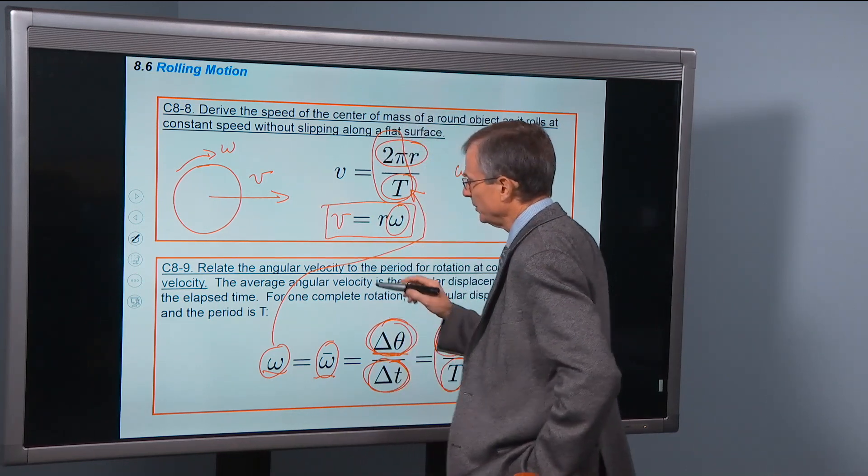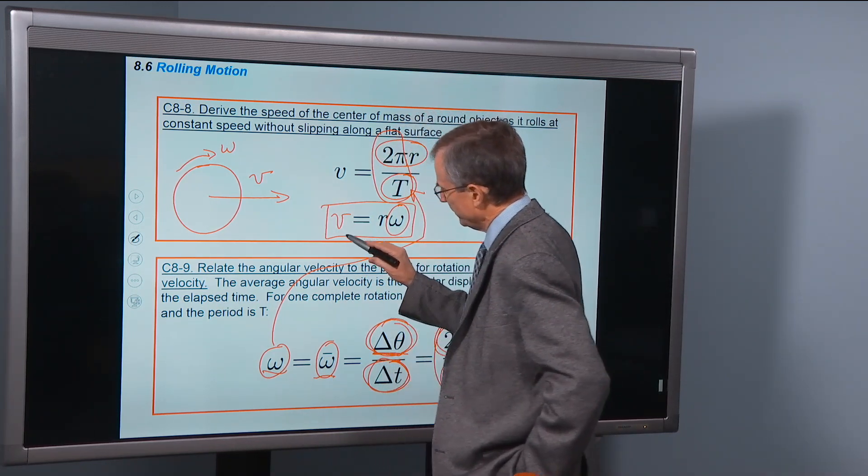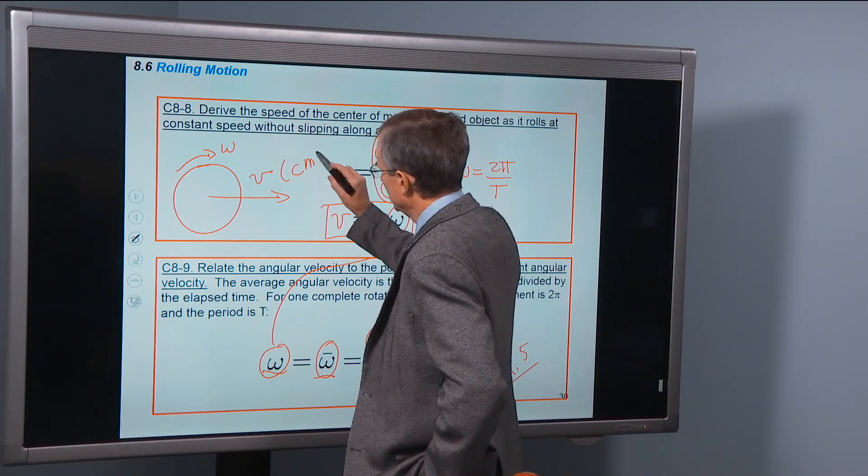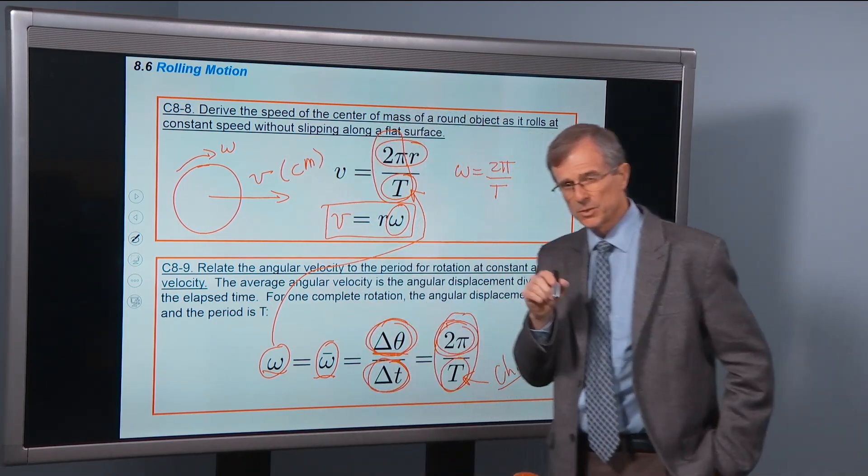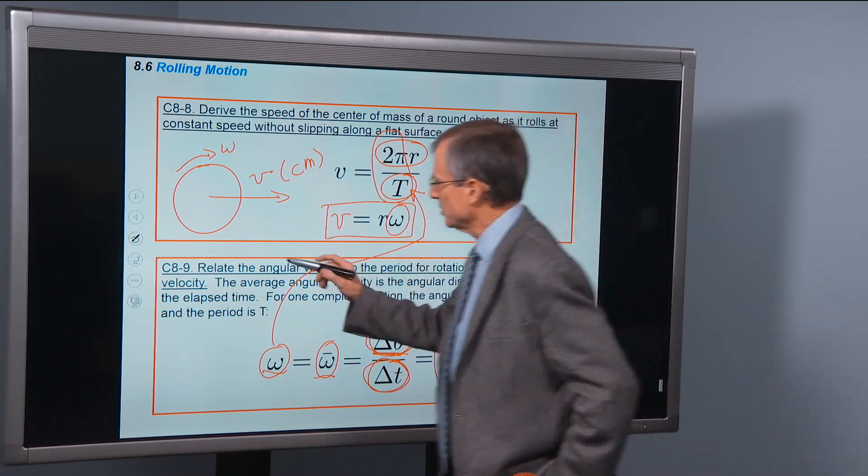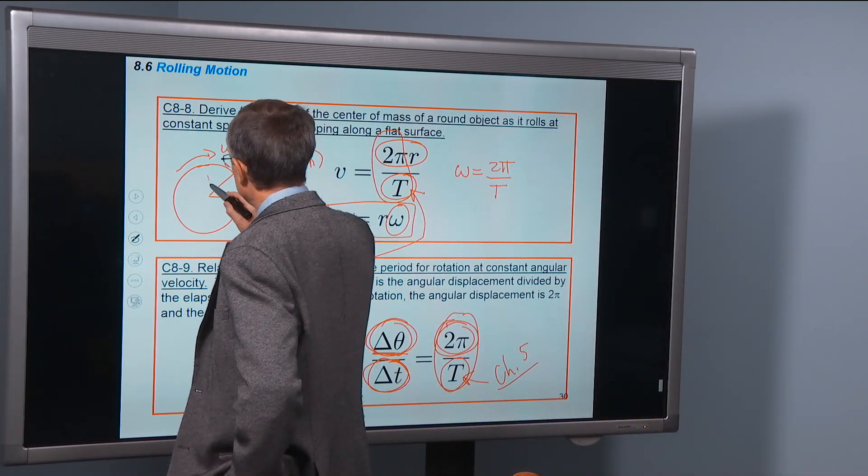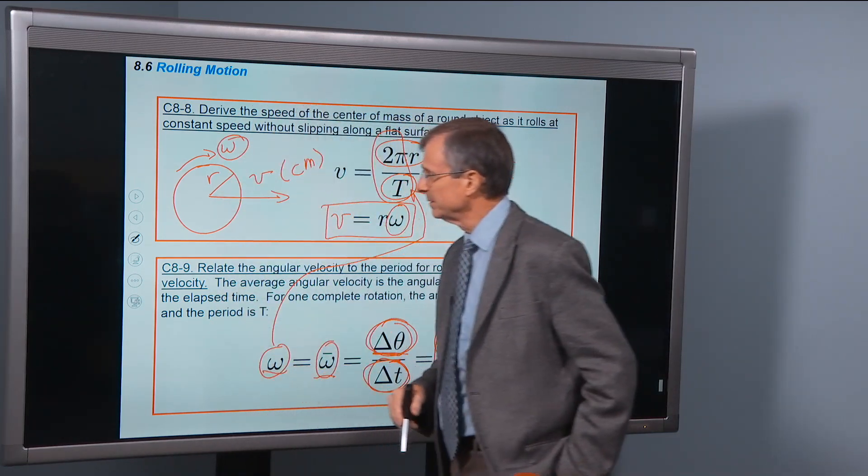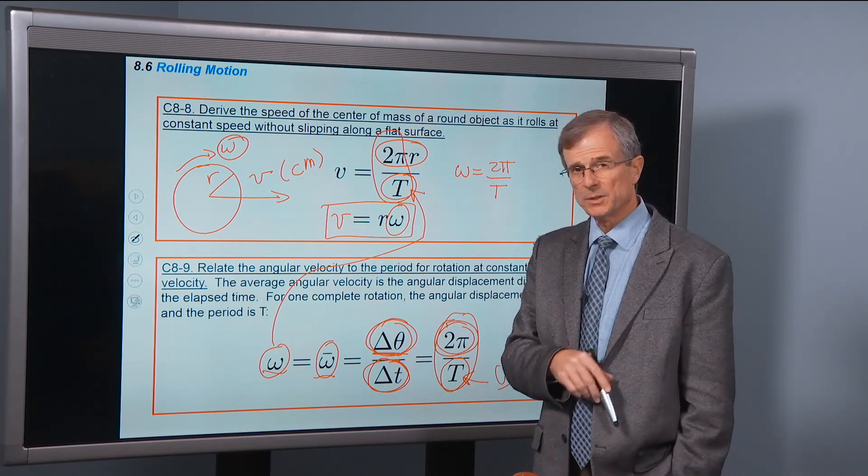So this is a relationship between the speed of the center of mass of the axle, the center of the circle as it moves along, the radius of the circle, and the angular speed of the circle, if it's rolling without slipping.